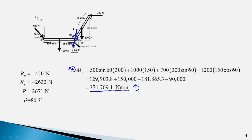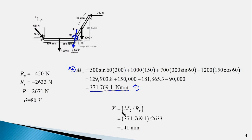So we have obtained the magnitude and direction of force R and the moment Mo of the force-couple system. Now we need to shift the force R so that its moment about O equals Mo. Since Mo is anti-clockwise and force R points downward, we shift R to the left of point O so that its moment about O is anti-clockwise. The distance x by which R needs to be shifted is computed using x = Mo / Ry. With Ry = 2633 N, x = 141 mm.